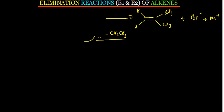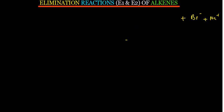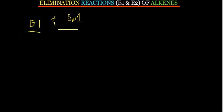Note that E1 reactions compete with SN1 because they share the same carbocation intermediate. If we want E1 to win over SN1, we increase the heat of the reaction — then E1 will happen instead of SN1.